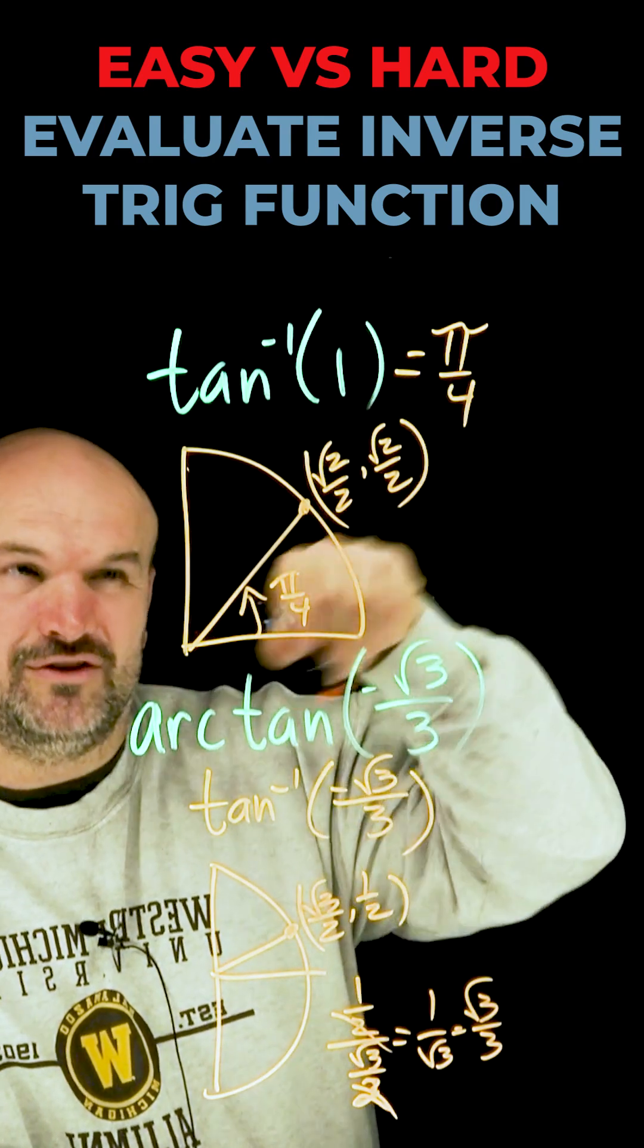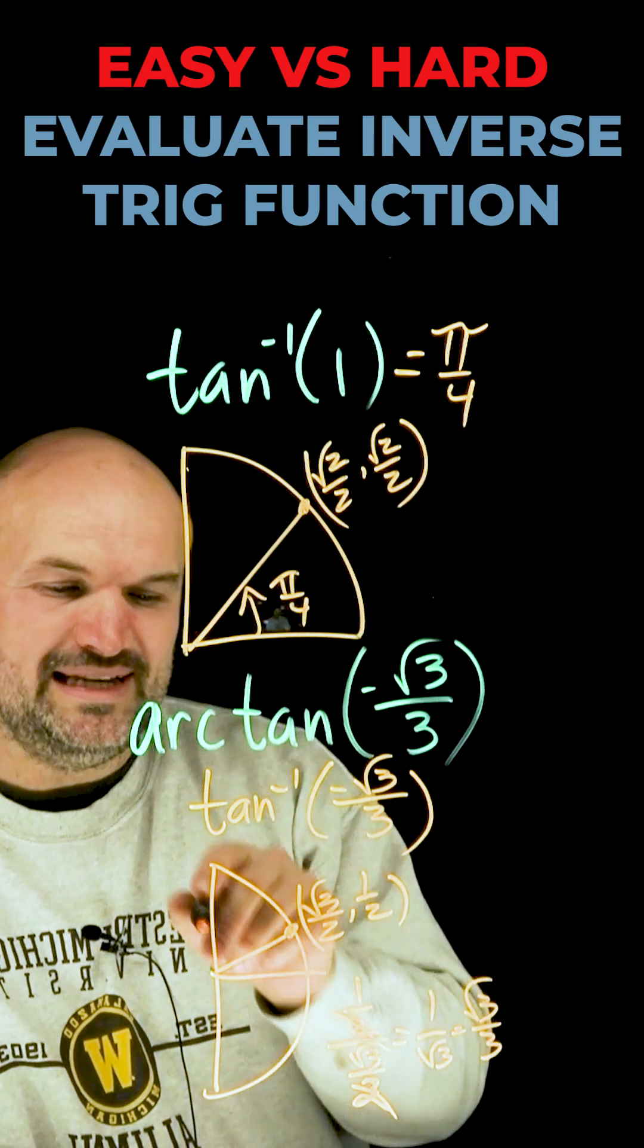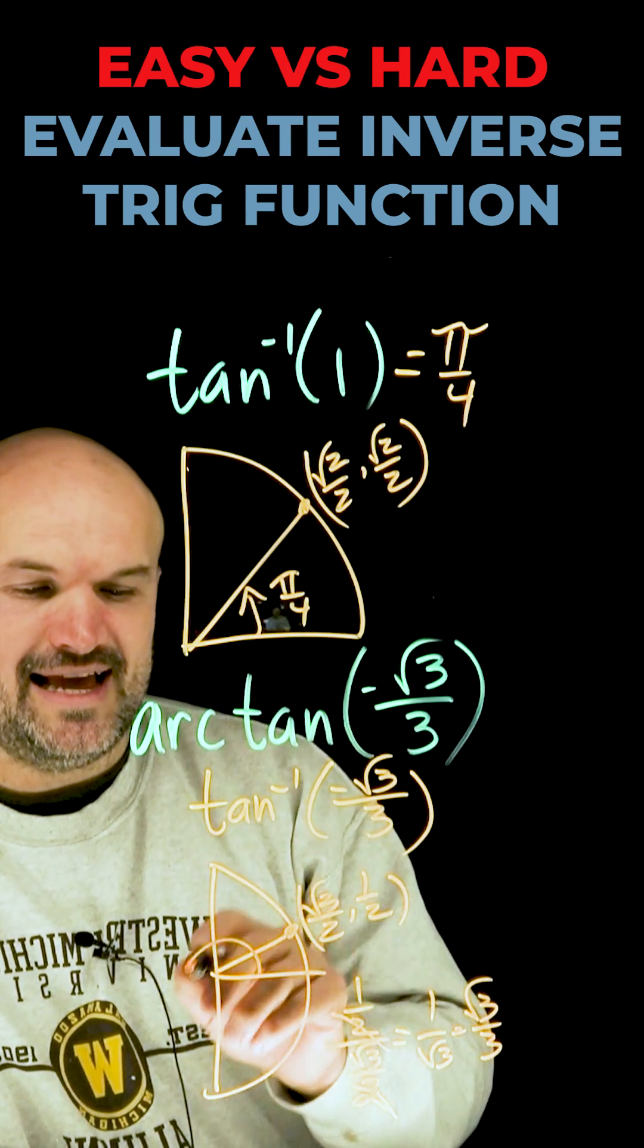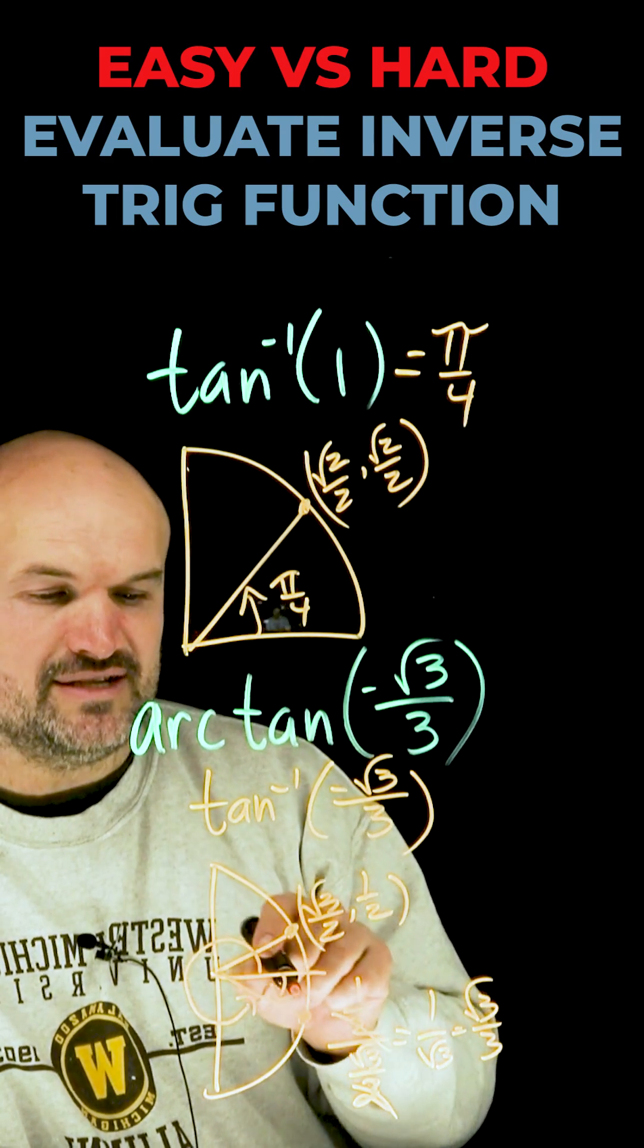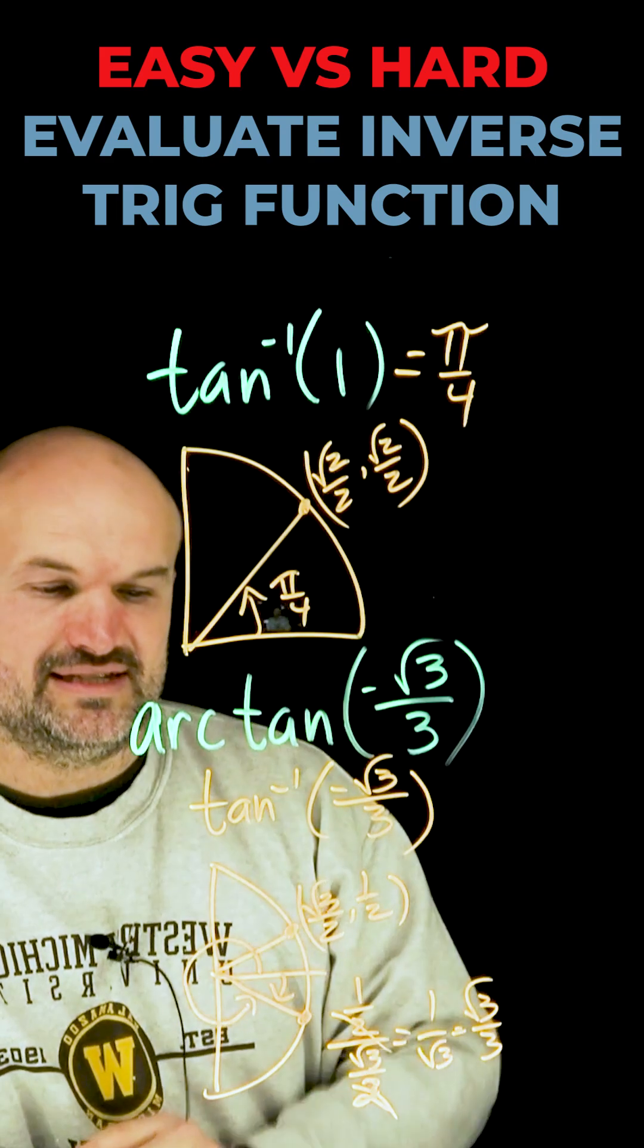When we have something positive, looking in the first quadrant is easy. But when it's negative, we need to stay within this restriction. I can't go all the way around. However, I can use the negative version of this angle to understand what exactly the angle is to satisfy this condition.